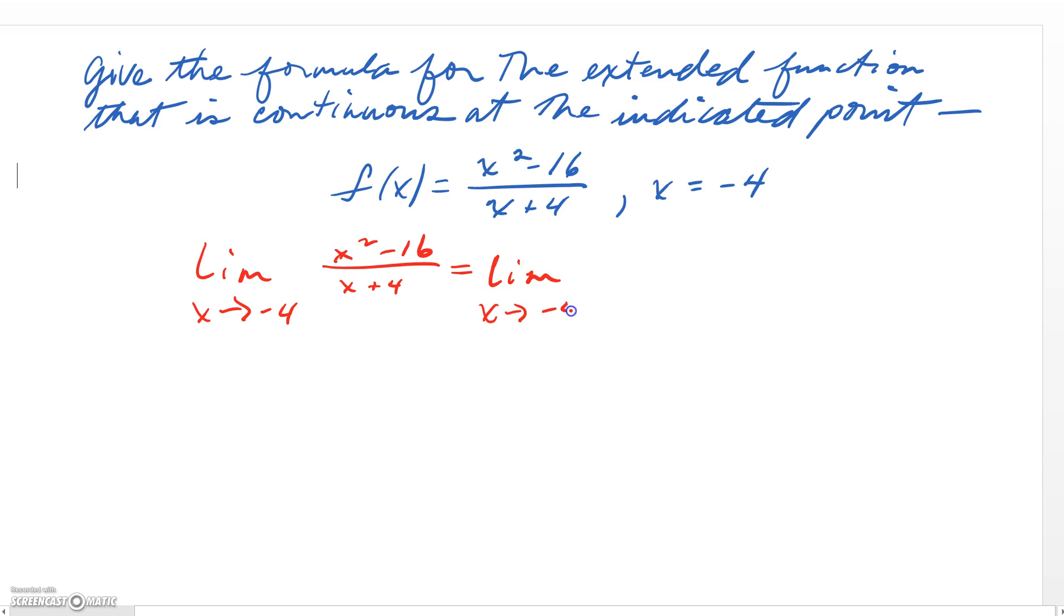So to evaluate this limit, we've got a difference of squares in the numerator, and we're going to factor that into x plus 4, x minus 4, and we can see quickly that we have revealed the same factor x plus 4 in the numerator and in the denominator.